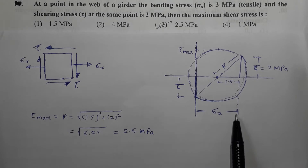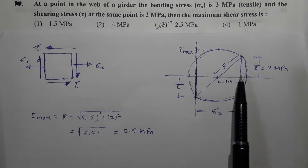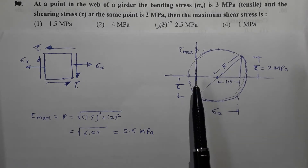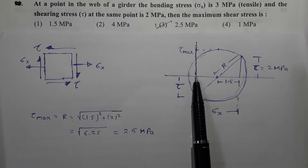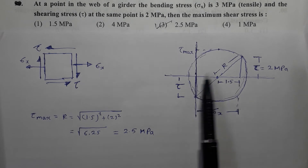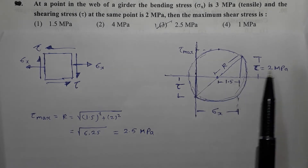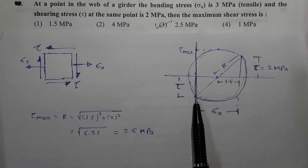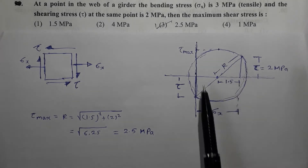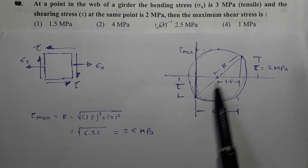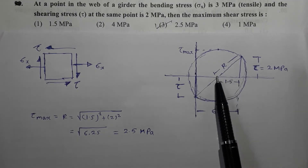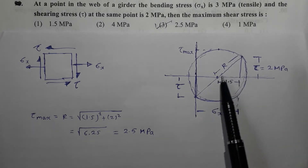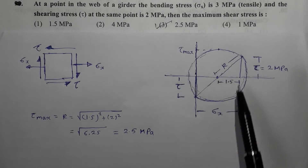Sigma x is given as 3 MPa. To a certain suitable scale, plot sigma x along the x-axis, which is equal to 3 MPa. Sigma y is 0, so it will indicate this point. At this position, erect tau, that is shear stress, which is equal to 2 MPa. Erect 2 MPa at this position also. After erecting these two values to a certain suitable scale, join these two together. The midpoint is going to be the center of the Mohr circle. Consider this point as the center; the radius is equal to this inclined distance. Draw a circle — it is going to be the Mohr circle.